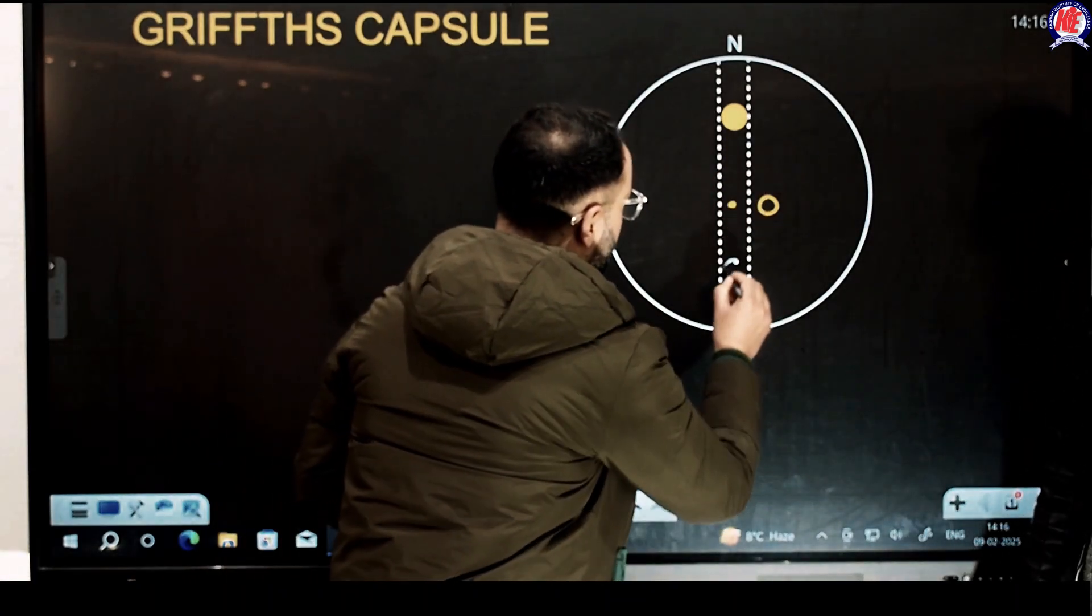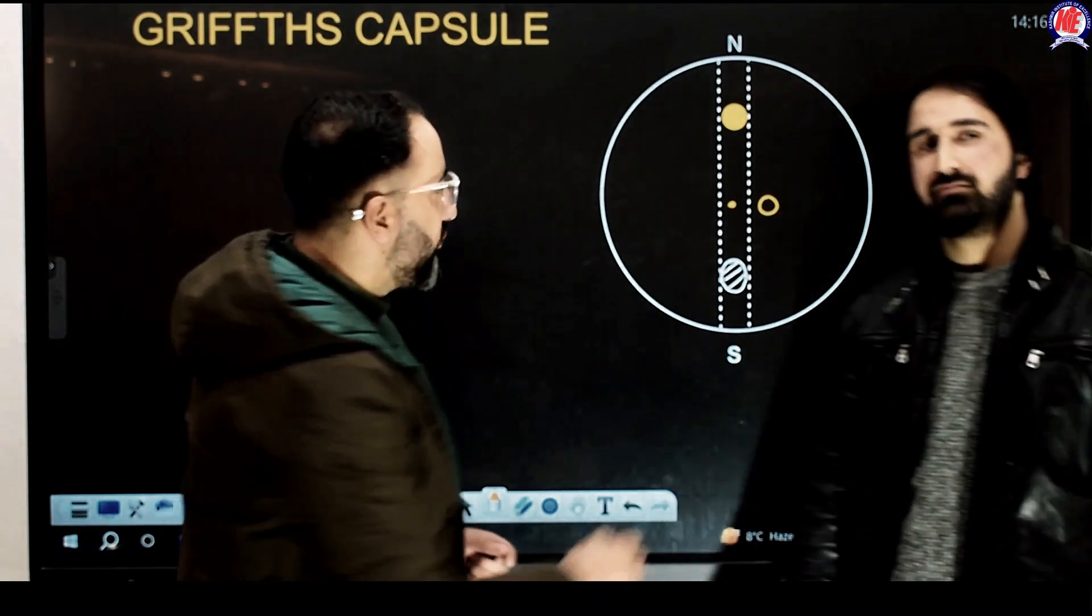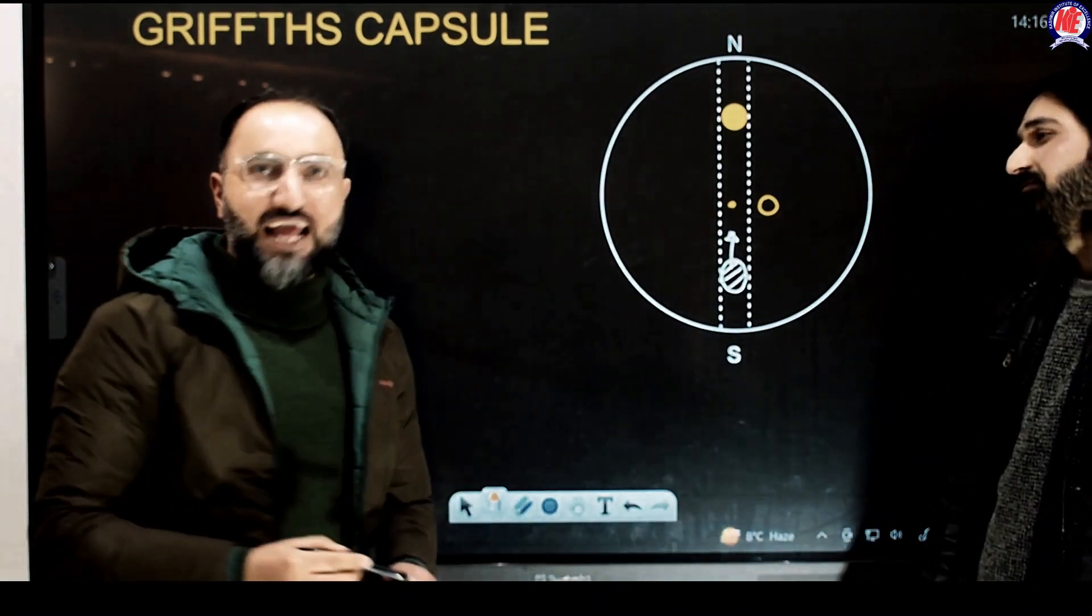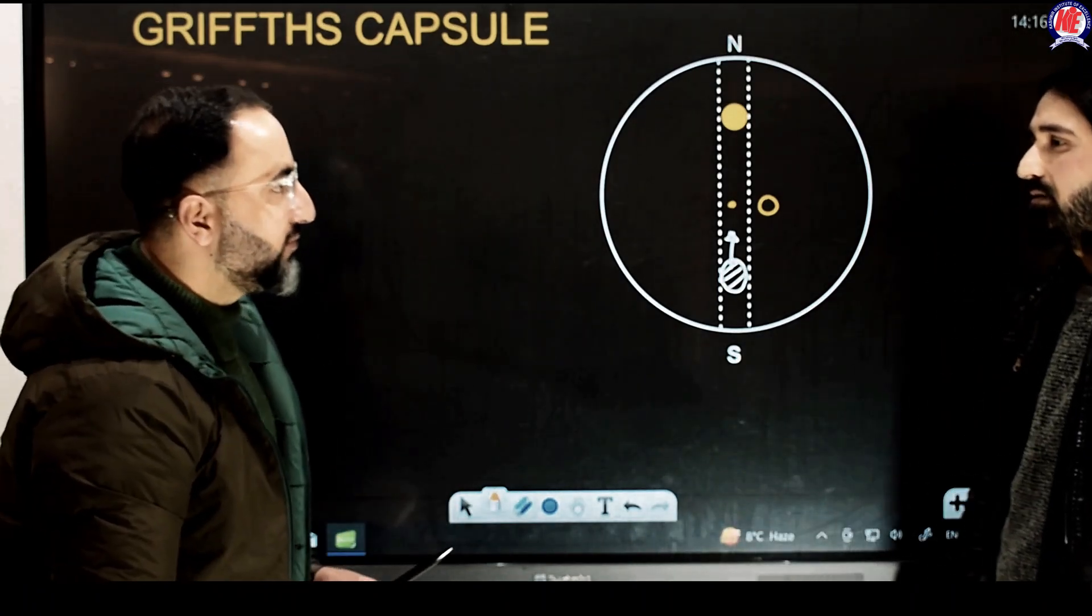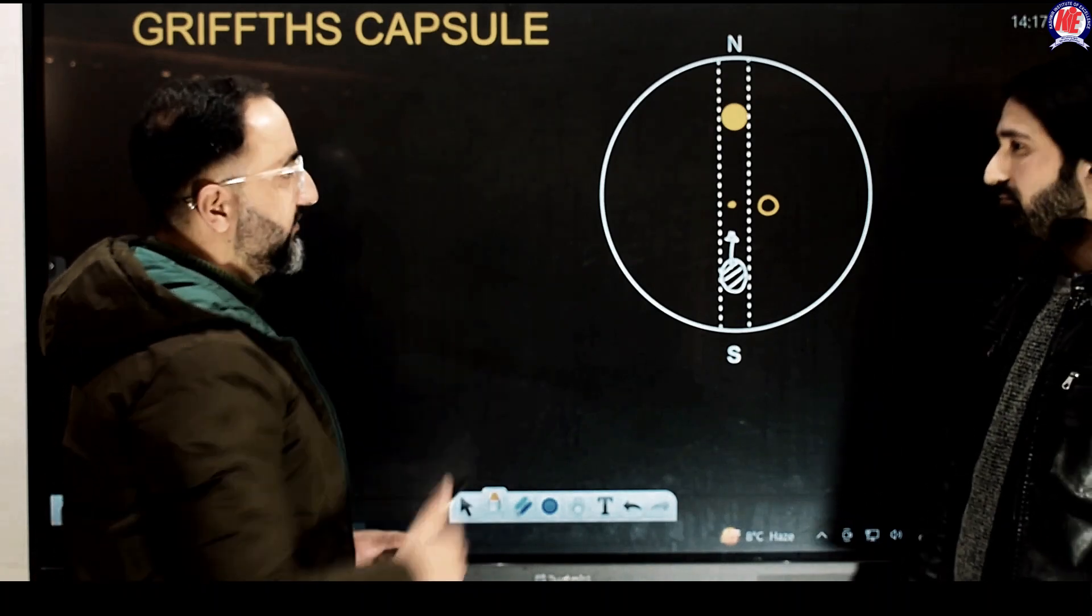And guess what? It will move towards the South Pole. But when it moves towards the South Pole, now the gravitational force will be directed towards the centre of the earth like this. And as a result, this particle is going to execute simple harmonic motion from North Pole to South Pole and then back.